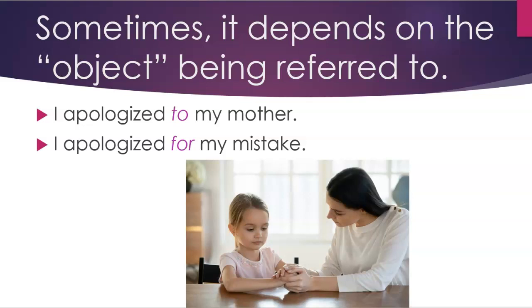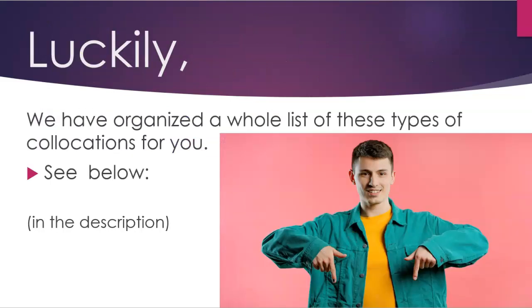Sometimes the collocation depends on the object being referred to. For example: 'I apologized to my mother' vs. 'I apologized for my mistake.' Luckily, we have organized a whole list of these types of collocations for you — see below in the description.